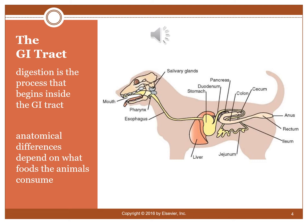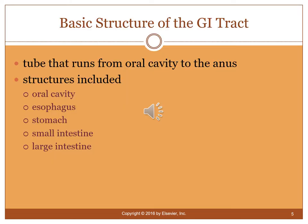Ruminants have four stomachs, so they ferment their food across those compartments — a big difference from monogastric animals. The basic structure of the gastrointestinal tract is pretty much the same across species: it's a tube running from the oral cavity to the anus, with structures including the oral cavity, esophagus, stomach, small intestine, and large intestine.